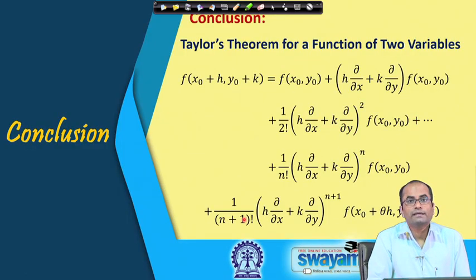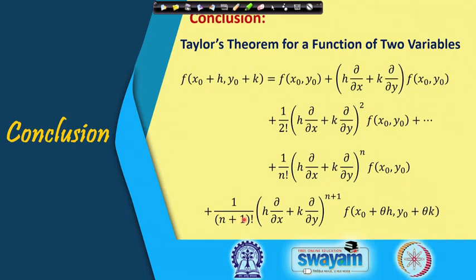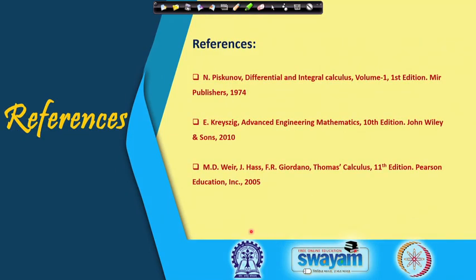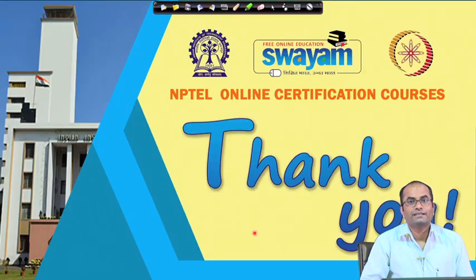We have learned Taylor's theorem for a function of two variables. It is just the extension of the single-variable case: we expand the function value at a neighboring point (x₀+h, y₀+k) with first-order terms, second-order terms in h², k², 2hk, and higher-order derivatives up to order n, plus a remainder term useful for estimating approximation error. Thank you very much.